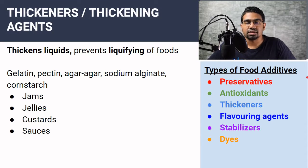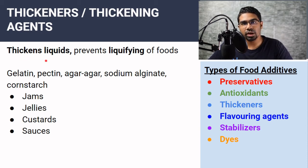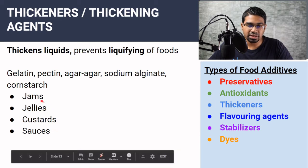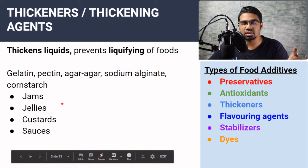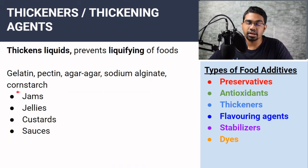Thickeners and stabilizing agents are sometimes grouped together, sometimes separately. The function of thickening agents is to thicken liquids or make them into a semi-solid form — used in jams, jellies, custard, and sauces, which all have a thick or semi-solid consistency. Common thickening agents include gelatin, pectin, agar-agar, sodium alginate, and cornstarch.